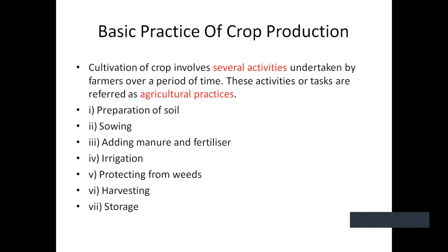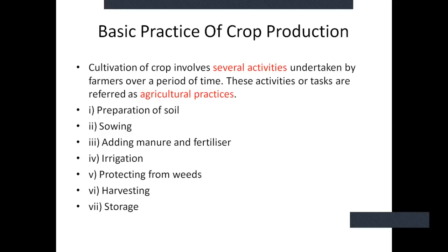The fifth step is protection from weeds. Sometimes different types of unwanted plants grow in the field which eat the nutrients of the actual crop — so these weeds are to be removed. The sixth step is harvesting — once the crop is grown properly, the farmer has to harvest it, remove that crop. And once harvested, the last step is storage — he has to store it properly so that the grain is not damaged.